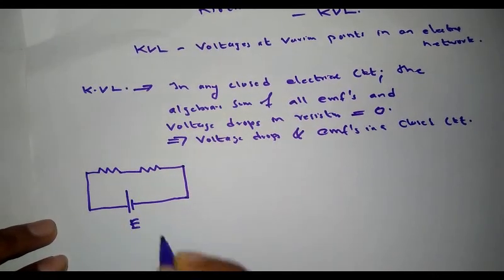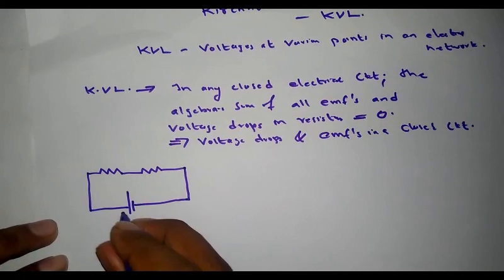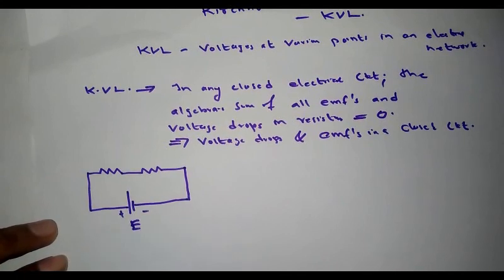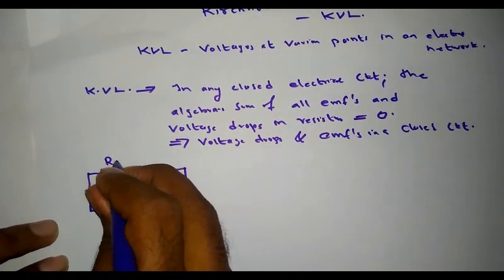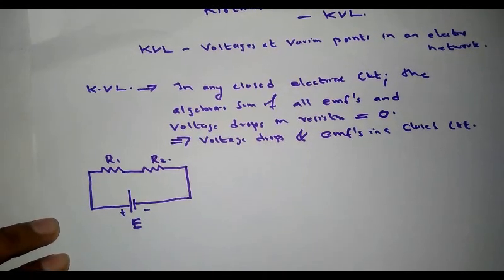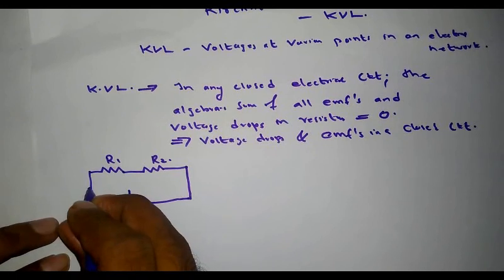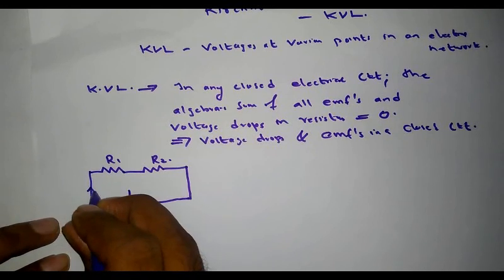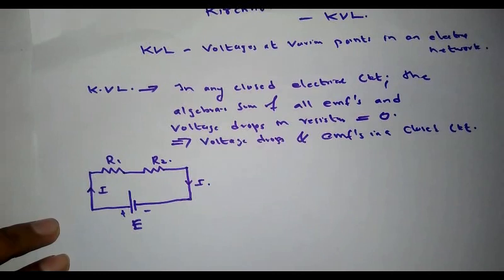Let E be the EMF source, R1 be the first resistor, and R2 be the second resistor. We know that this is a closed electrical circuit and electric current will flow through it. Let us consider the direction of electric current to be clockwise, that is, current I is flowing in the clockwise direction.